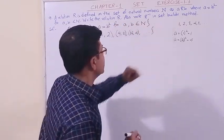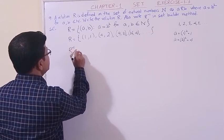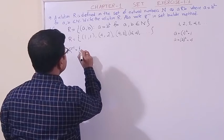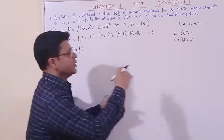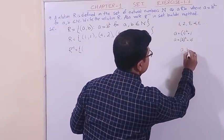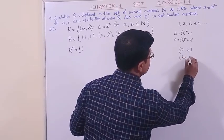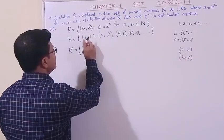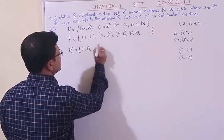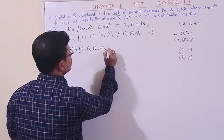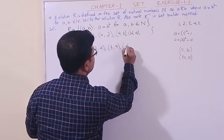First, in tabular method for the inverse relation, we interchange the components. So for R inverse, what was (1,1) becomes (1,1), what was (4,2) becomes (2,4), what was (9,3) becomes (3,9), and (16,4) becomes (4,16).